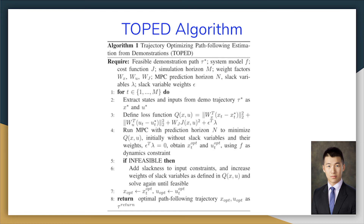We are given a demonstration path, a system model f, a cost function j, simulation horizon m, weighted factors w_x and w_j, and MPC prediction horizon n, and slack variables which are optional — lambda and slack variable weights epsilon.